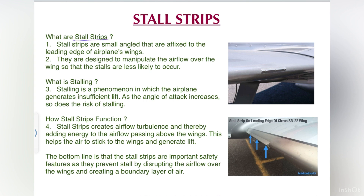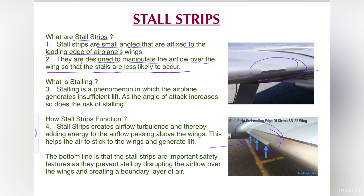Stall strips are the small angles that are fixed to the leading edge of the airplane wing. As you can see on the screen, this is the airplane wing and at the leading edge these stall strips are fitted. They are designed to manipulate the airflow over the wing so that stalls are less likely to occur. A part of air flows above the wing and another part flows below the wing, and these stall strips manipulate the air which is flowing above the wing.